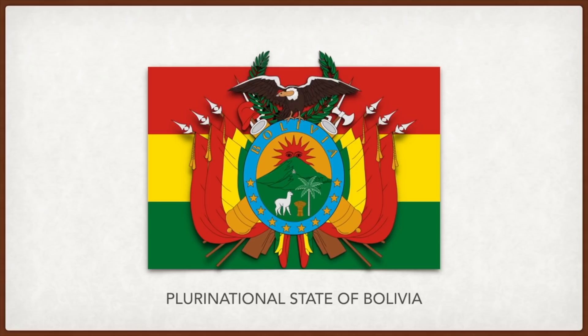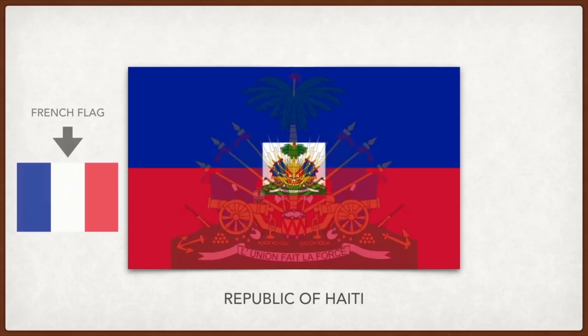Haiti: the coat of arms depicts weapons symbolic of their readiness to defend freedom and a palm tree symbolic of independence. The French inscription says 'Unity is strength.' According to tradition, the flag was created by a revolutionary leader who split the French tricolor, threw out the white stripe, and asked that the blue and red stripes be sewn together.